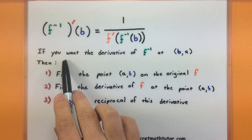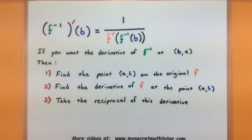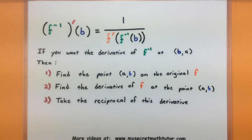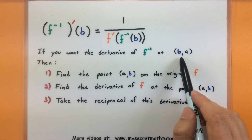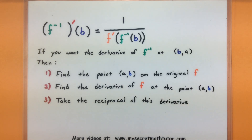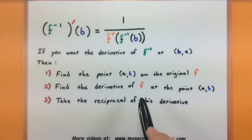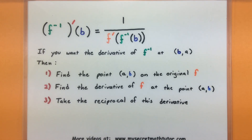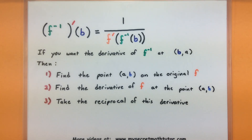Here's what we get from the formula. If you want to find the derivative of the inverse of a function at some point — let's call this point (b, a) — then you really need to do three things. First, figure out what is the corresponding point on the original function. If I'm looking at the inverse at some point (b, a), then the corresponding point on the original is going to be (a, b) — the two points are reversed. Once I have that point, go ahead and find the derivative of the original function at that point. Then, once we know the derivative of the original at (a, b), we simply take its reciprocal and that'll be the derivative we're after.